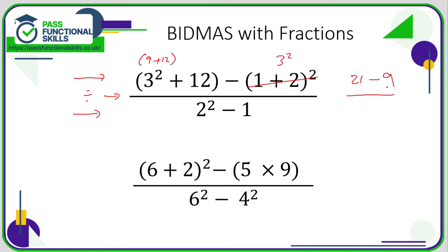So the top is 21 take away nine. On the bottom, we do indices first: two squared is four, minus one is three. The top line is 21 take away nine, which is 12, over three. This line means divide, so 12 divided by three gives us an answer of four.